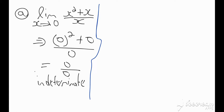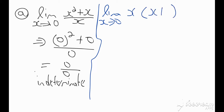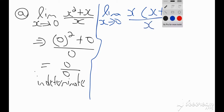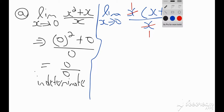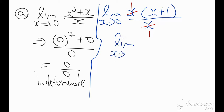We're therefore going to have to look at using a different method. If we look at this expression, we notice that it can be factorized. So I'm going to have the limit as x tends towards 0. Notice x is common in the numerator, so I could take out an x, giving x times (x plus 1) all over x. We can reduce by cancelling x, so we end up with the limit as x tends towards 0 of x plus 1. We can now replace x by 0, giving 0 plus 1, which is equal to 1.